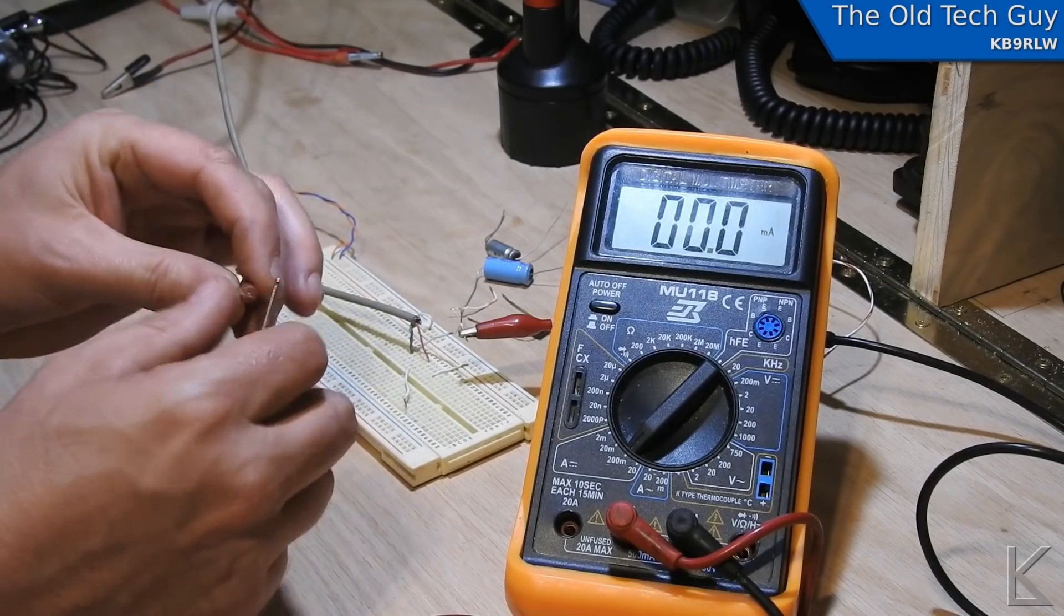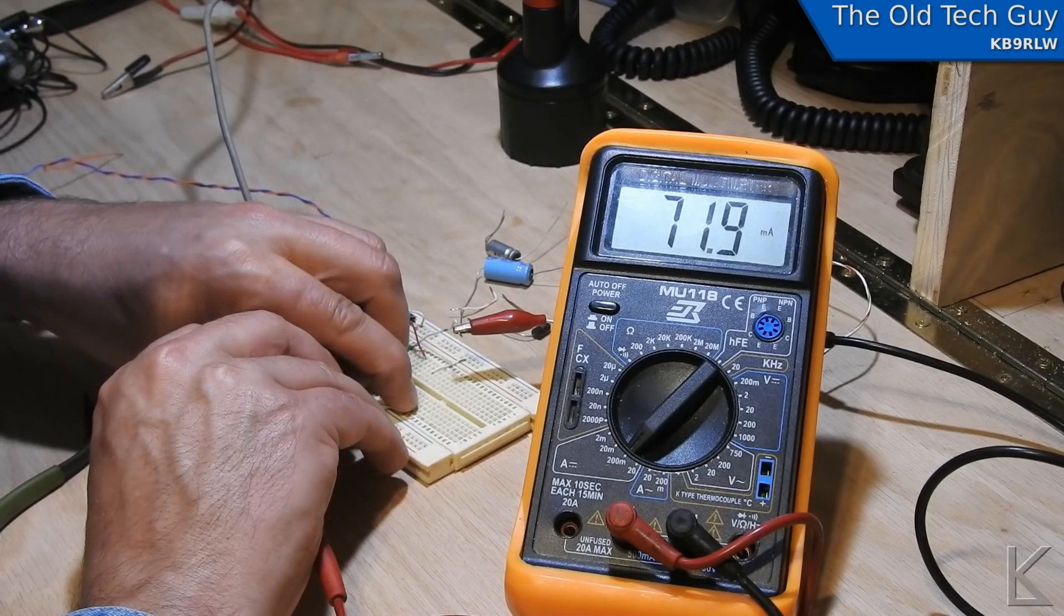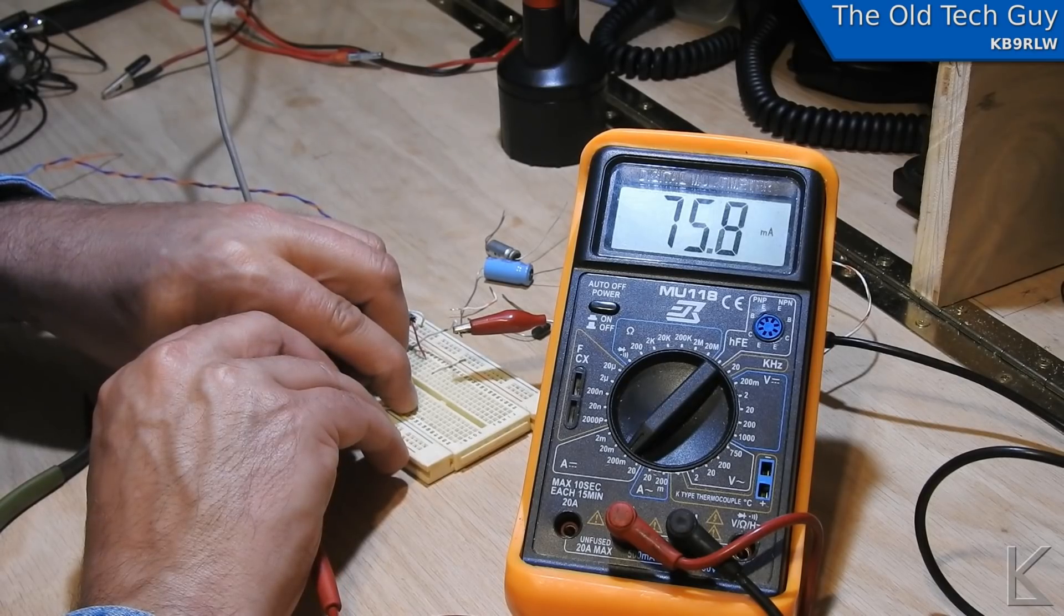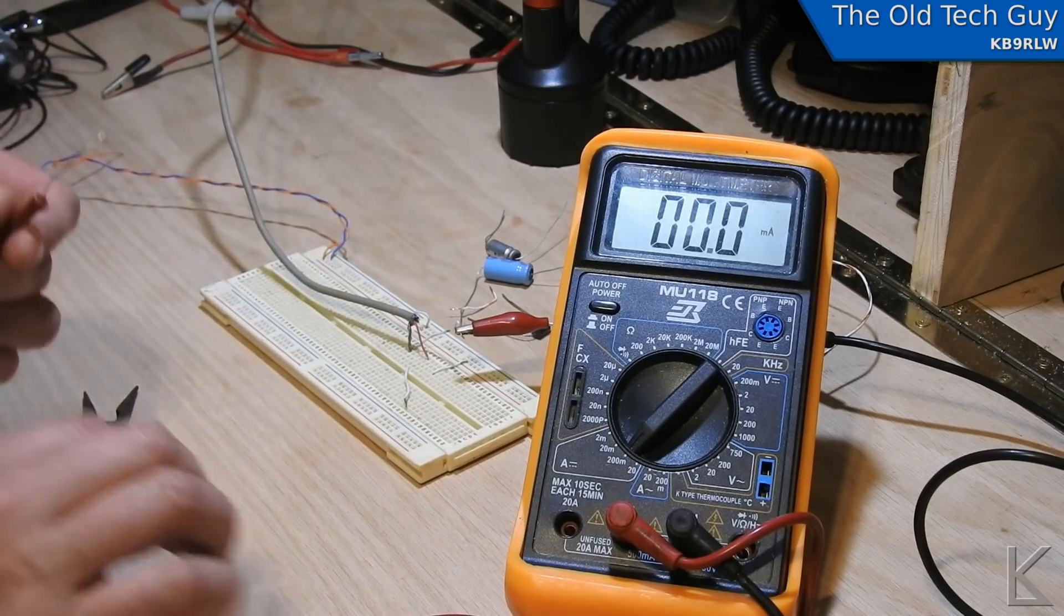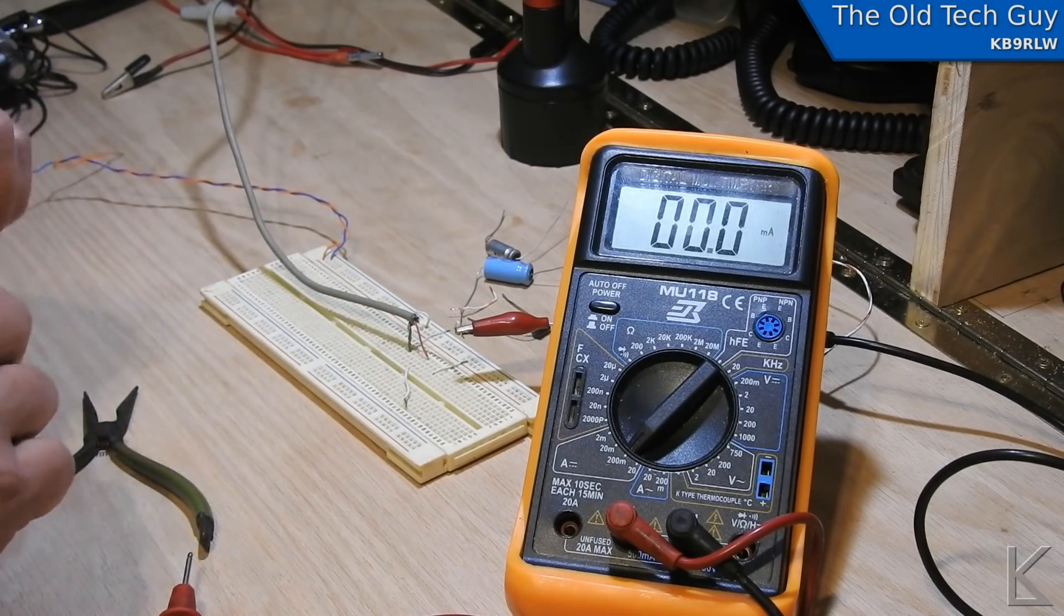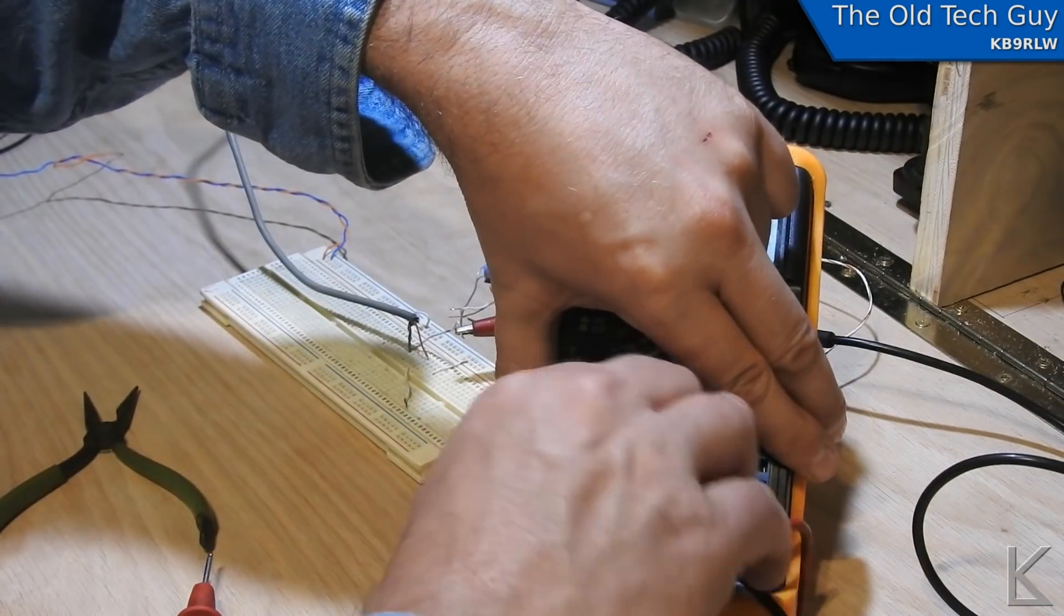So I've got the resistor. I'm going to put it in series with the probe, and we're going to see what kind of current we measure. 76 milliamps. All right. That's a pretty good load. So we'll put that load across it, and then we'll see what our voltage drops to.